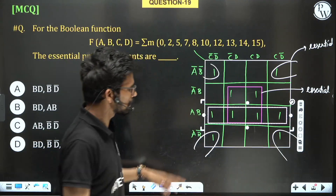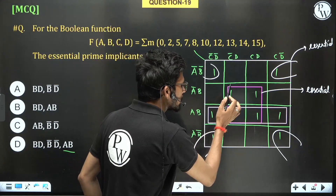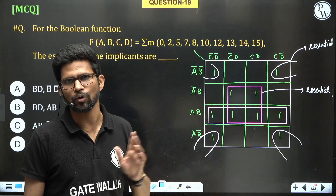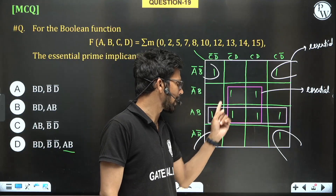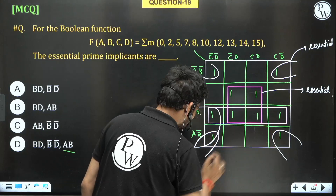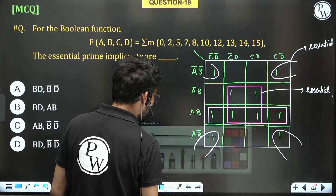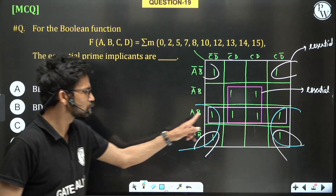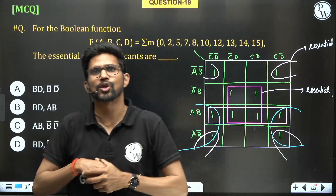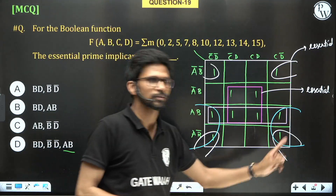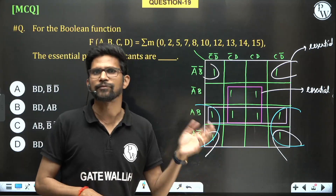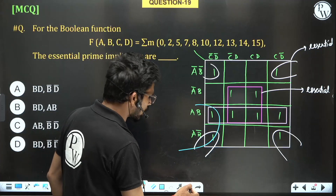Now look at this horizontal prime implicant. It has four ones. These two ones can be covered by the pink prime implicant, and the other two ones can also be covered by another prime implicant. So all four ones of this horizontal quad can be covered by other prime implicants as well. Therefore, it is a non-essential prime implicant.